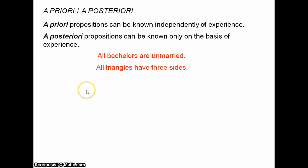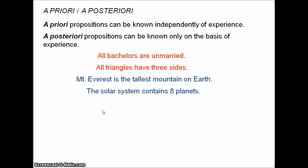A posteriori truths include 'Mount Everest is the tallest mountain on Earth' and 'the solar system contains eight planets.' A priori propositions may be very difficult to come to know — for a mathematical problem like 567 times 391, it might take you a very long time to figure it out in your head. It might be a lot easier to just go to a calculator. But in principle, you could do it just sitting in your armchair and thinking about it.